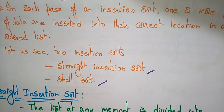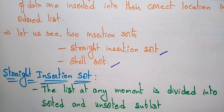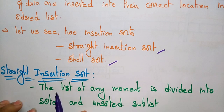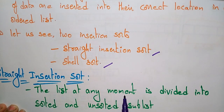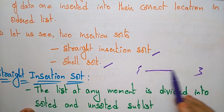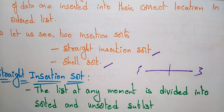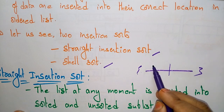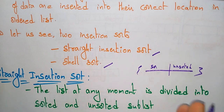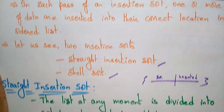Now let us see the stride insertion sort. In stride insertion sort, the list at any moment is divided into sorted and unsorted sublists. Whatever list you are taking, which is unsorted, that list will be divided at any moment into one sorted and another unsorted. In that way, you have to insert the elements so that you make the final list sorted.